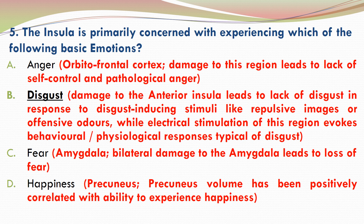A is incorrect because it is the orbitofrontal cortex that is concerned with anger; damage to this region leads to lack of self-control and pathological anger. C is incorrect because the amygdala is concerned with fear, and bilateral damage to the amygdala leads to loss of fear. D is incorrect because it is the precuneus that is concerned with happiness; studies have shown that the volume of the precuneus is positively correlated with the ability to experience happiness. So the correct answer is B.